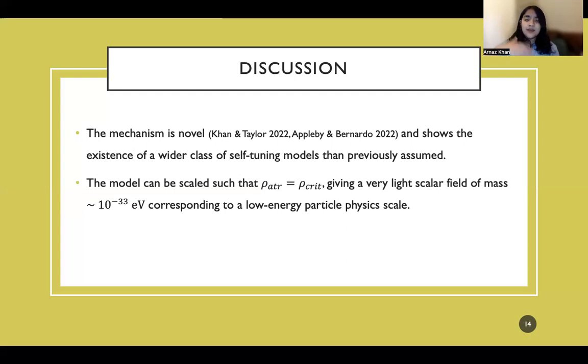What we can also do is scale this model such that the attractor energy density is equal to the critical energy density today. And what we get from this is that the mass scale of the field would have to be a very, very light scalar field, which corresponds to a low energy particle physics scale. And this is roughly similar to what you find in quintessence models as well. The model may actually be a lower energy manifestation of a high energy theory, because you see g3 type interaction of the box phi interaction and non-polynomial kinetic interactions in models such as that of brane cosmology.